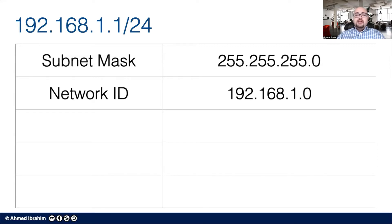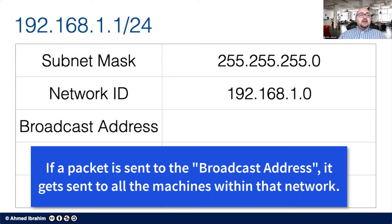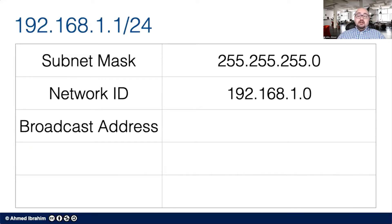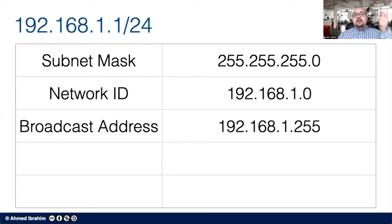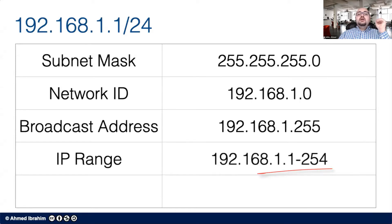The network ID, 192.168.1.0, is just a number naming the network — it cannot be assigned to a machine. There's also a broadcast address, which is the last address in a network. If any machine sends to the broadcast address, the packet is delivered to all machines in that network. The last IP address in this /24 network is 192.168.1.255, so the usable IP range for machines starts at 192.168.1.1 and ends at 192.168.1.254.